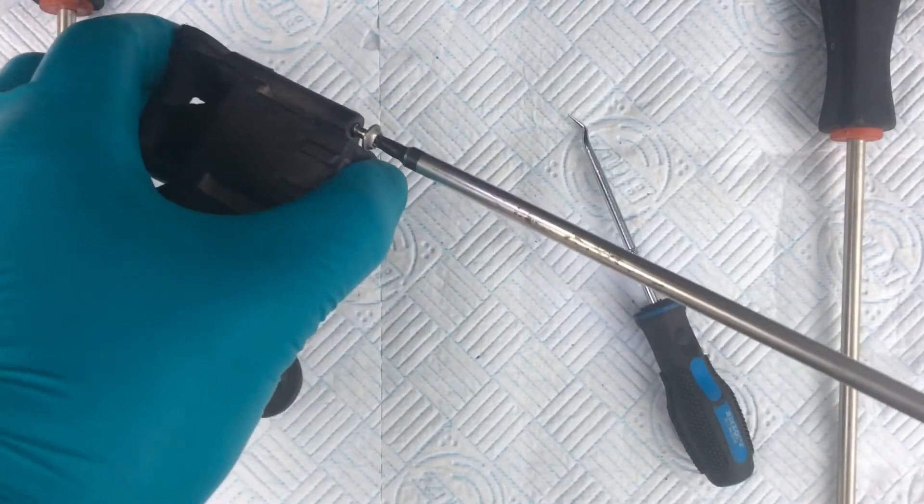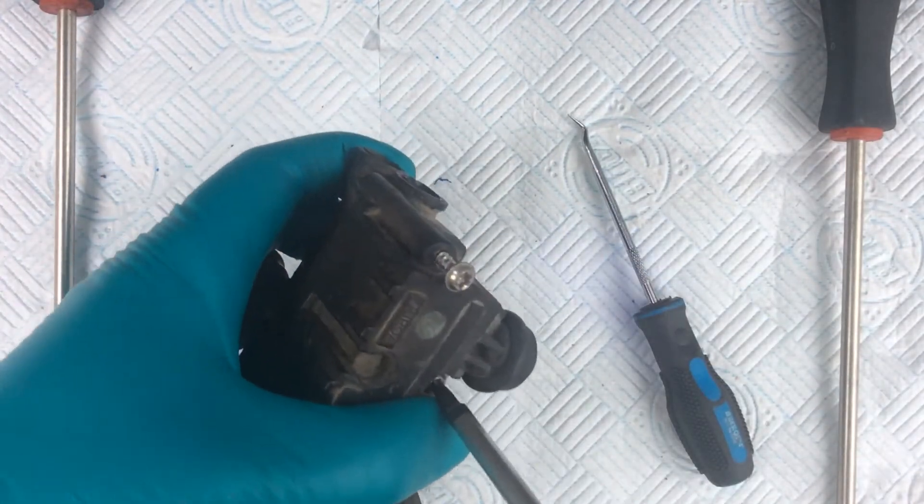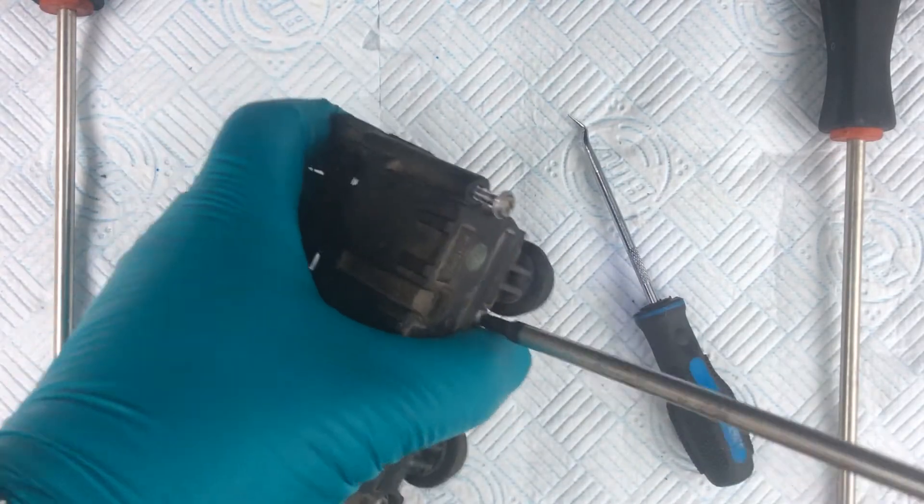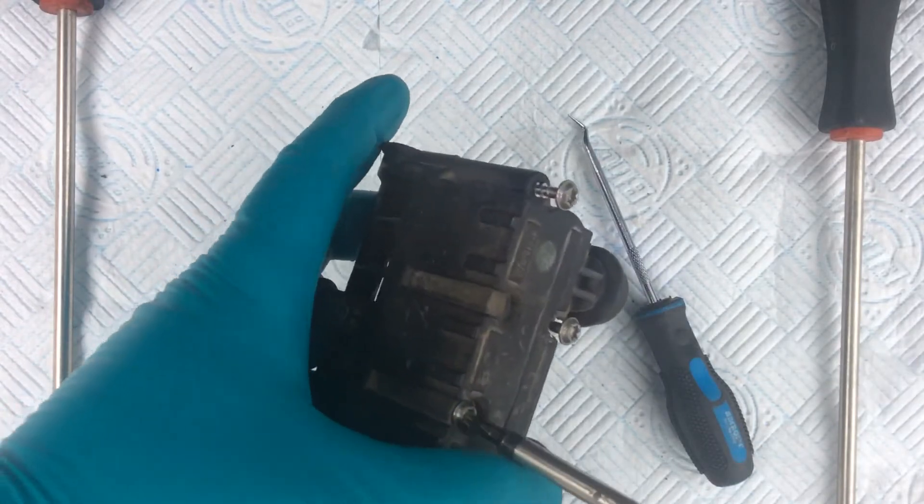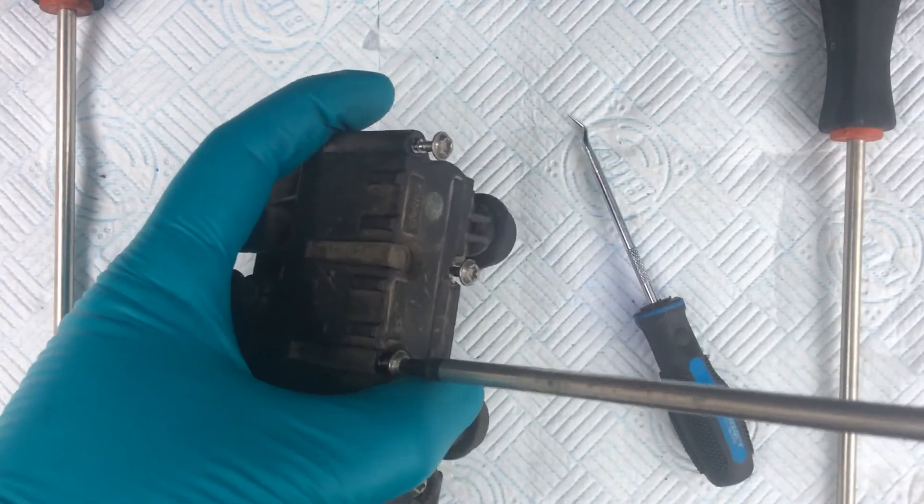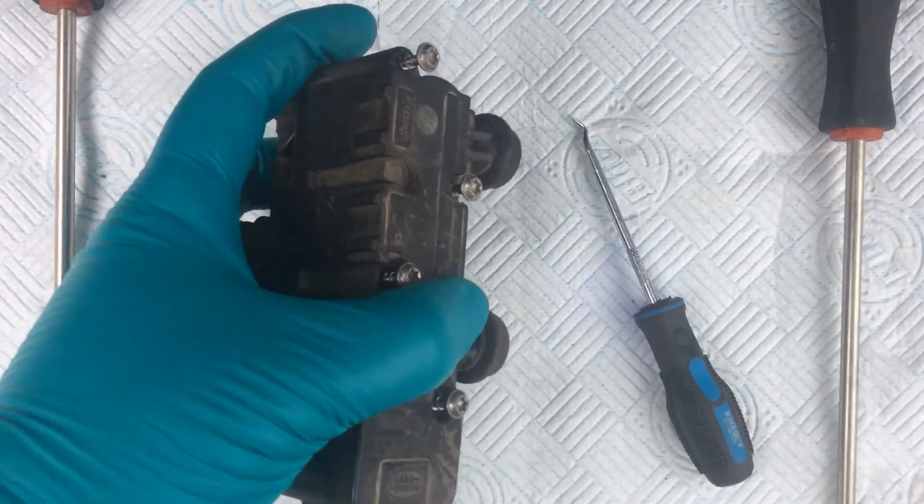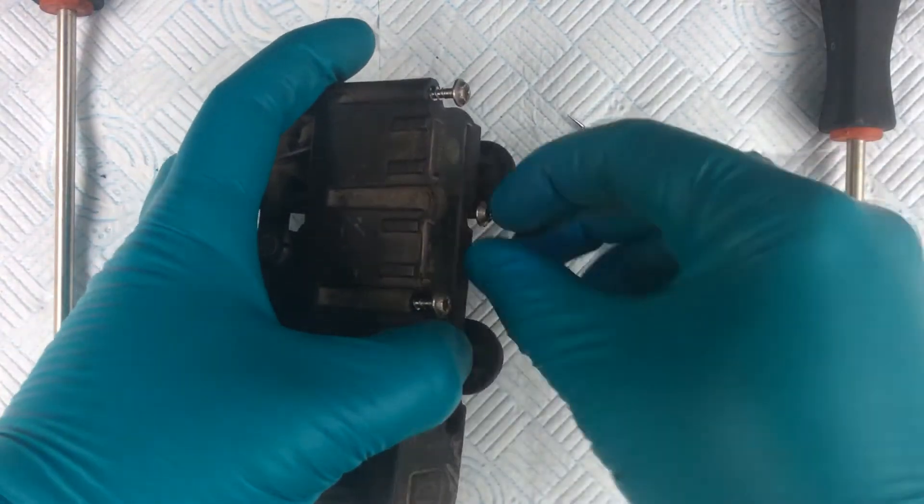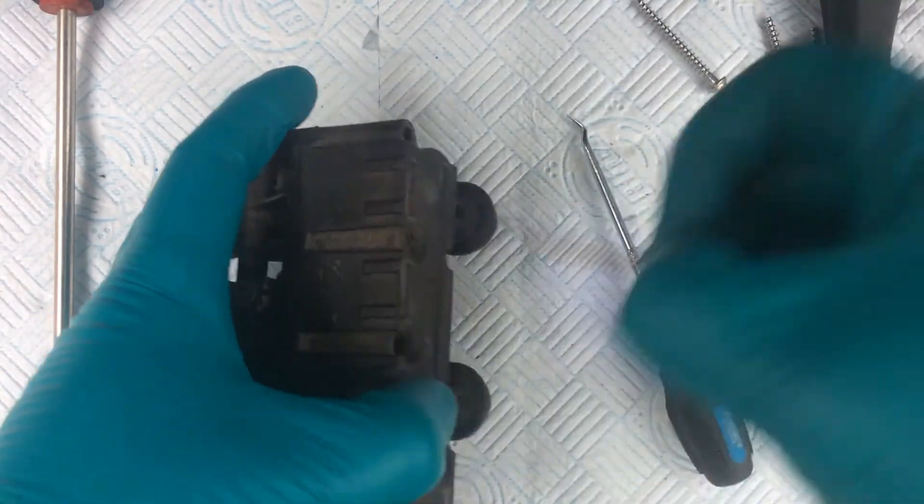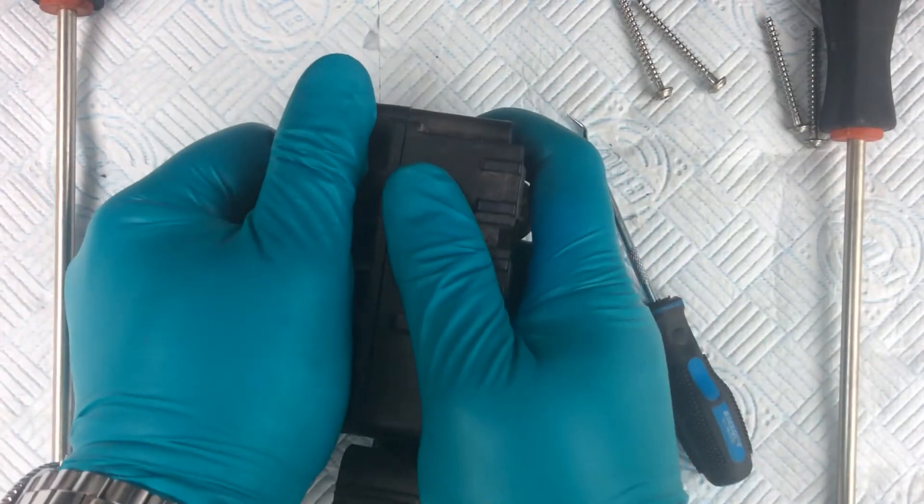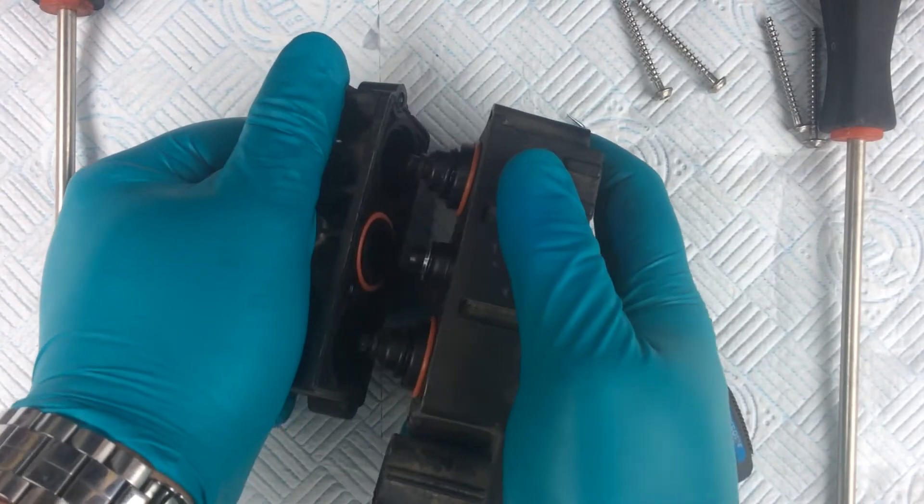So we've got four screws here, quite straightforward to undo. So we'll get those out, two, three, four. And as before, we carefully take the block apart.